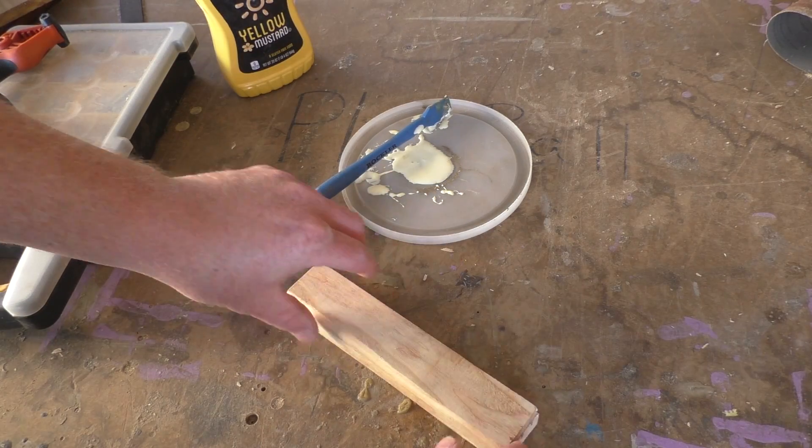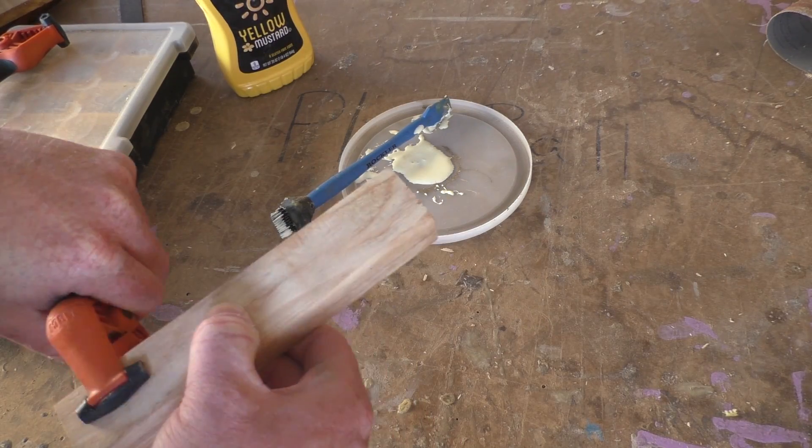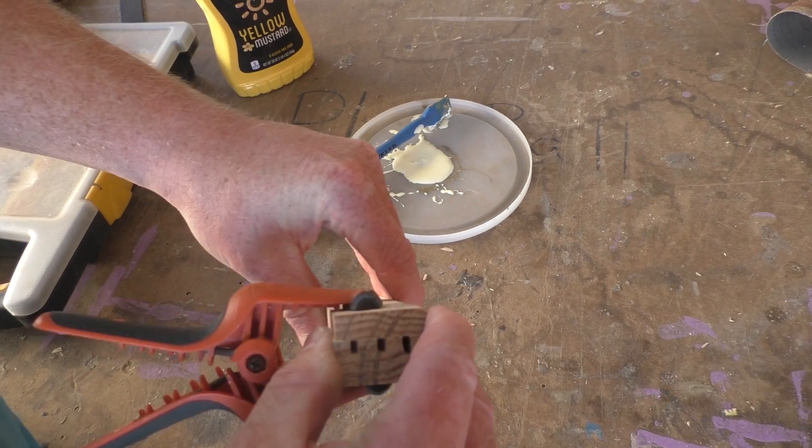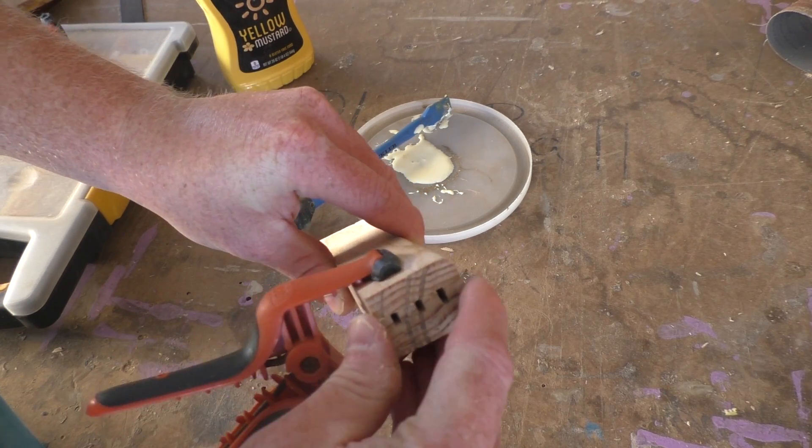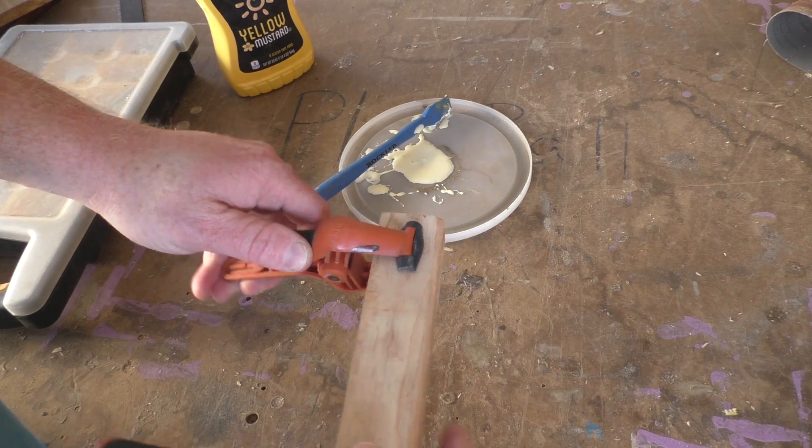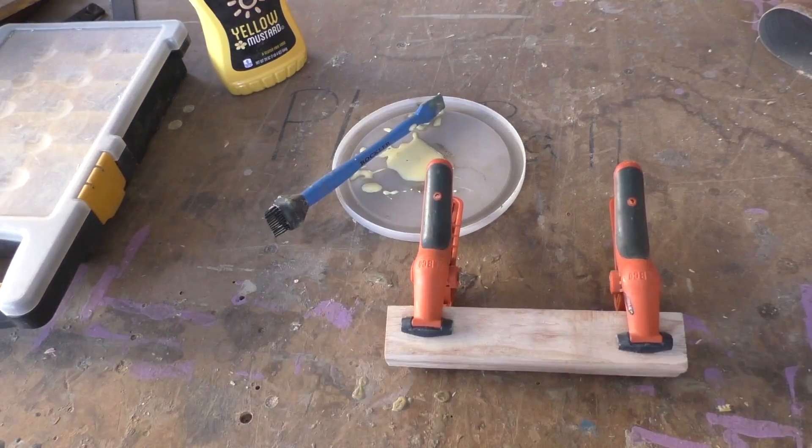You could use just about anything to hold these together. You can use rubber bands, any kind of clamps that you have. I have some spring clamps here that I'm just using. It only takes about 20 minutes for the glue to set up and I can take off the clamps and it's pretty much done.